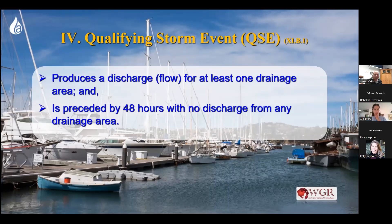It also has to have at least 48 hours prior with no discharge. So if you had a lot of rain on Monday and there's flow and you grab a sample, you can't grab another sample on Tuesday because it hasn't been 48 hours since the last discharge ended. It has to be 48 hours since the last discharge ended before you can grab another sample. But if a heavy rain comes on Monday and you grab a sample, then 48 hours or more later another storm comes through and you have another discharge, you're welcome to grab another sample. To sum up the QSE — a qualifying storm event: flow and 48 hours.